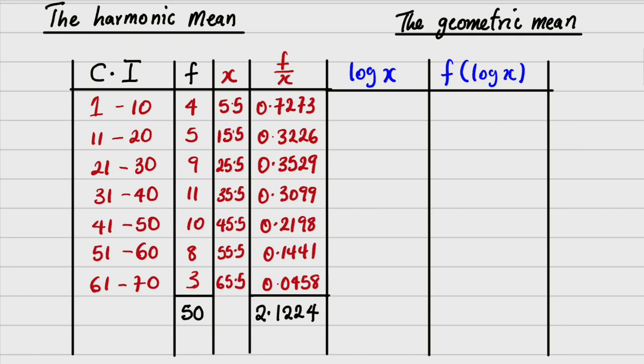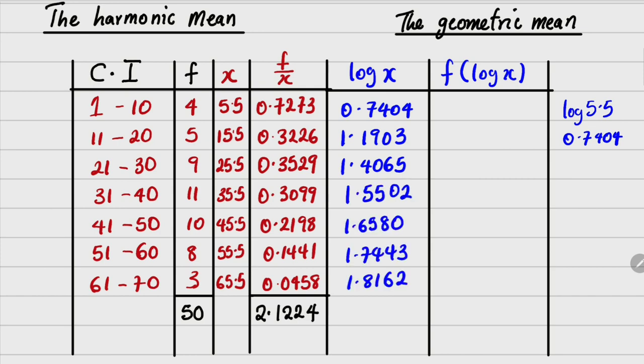Without any waste of time, we move to find log of x. We have x already. The first column to get it will be log of 5.5, and using calculator to find log of 5.5, it gives you 0.7404. The second is log of 15.5, which is 1.1903. The next is log of 25.5, which is 1.4065. So the column of log of x has been filled.